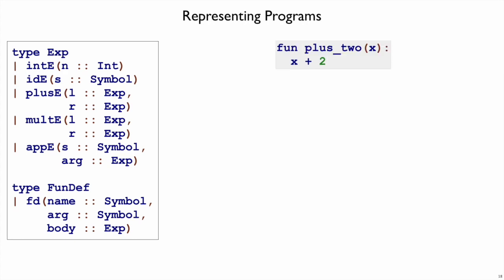How about this function definition? So now we're looking not at the expression representation, but the function definition representation, so it must be an fd. And we have a name as a symbol for the function. That's the plus 2 comes from this part. The x comes from the argument name right here, and then the body expression, x plus 2. We've already talked about that. That's the plus e form.